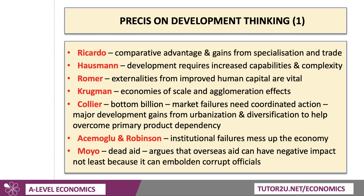Professor Paul Collier, latterly of the World Bank and Oxford University, wrote the famous book The Bottom Billion, which looked at extreme poverty in the poorest billion people in the world. He argued this was a result of complex market failures — market failures in education, in healthcare, in housing — and that it needed coordinated action at a global level, as individual countries often had little they could do alone. He argued for a global perspective, including reforming the way aid is handed out. He also said that major development gains from urbanisation could be generated, arguing that no country on the planet has grown rich without urbanising first, and that countries should diversify to help overcome primary product dependency.